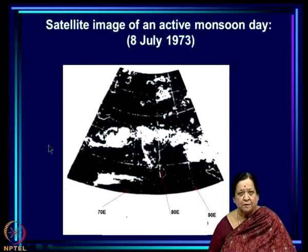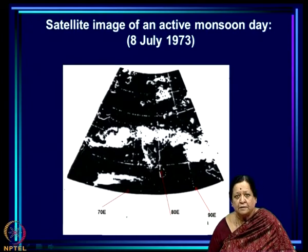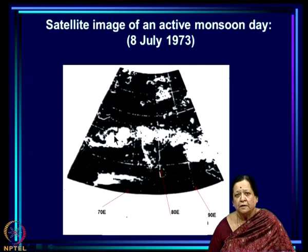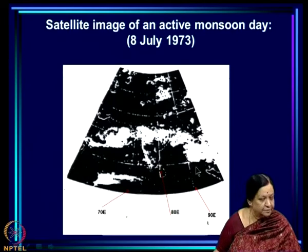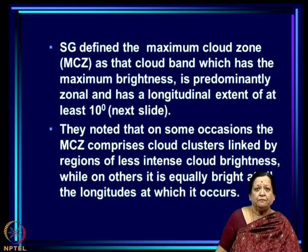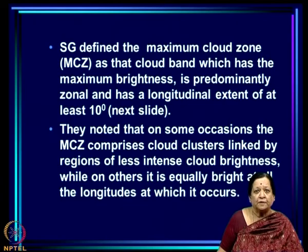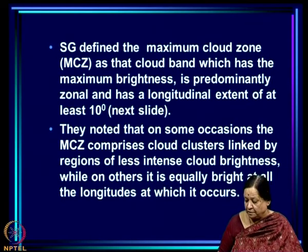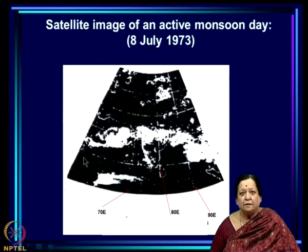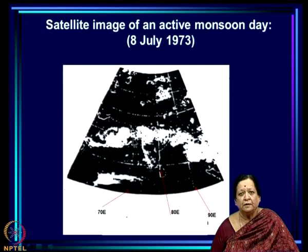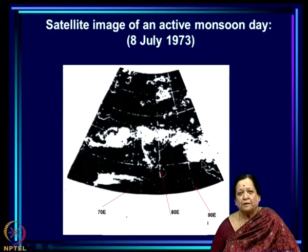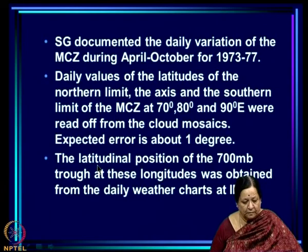The Maximum Cloud Zone (MCZ) is defined as that cloud band which has the maximum brightness, is predominantly zonal (east-west direction), and has a longitudinal extent of at least 10 degrees. This classic picture shows the band going coherently from about 60 degrees east to beyond 100 degrees east — more than 40 degrees of longitude, satisfying the criteria. On some occasions the MCZ comprises cloud clusters linked by regions of less intense cloud brightness; on others it is equally bright at all longitudes.